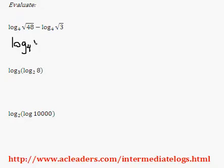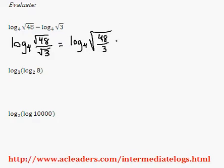Base 4, and here we have root 48 over root 3. Whenever we're dividing two radicals, we can actually combine them as long as we have the same exponent for both of them, and the exponent here would be half, so that's fine. We have root 48 over 3, and so log base 4 of 48 over 3 is just 16.